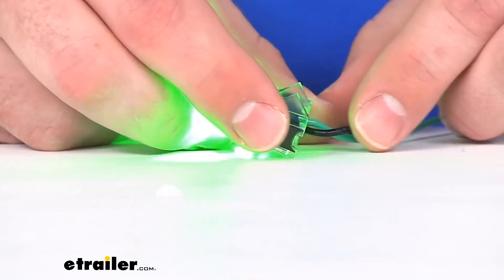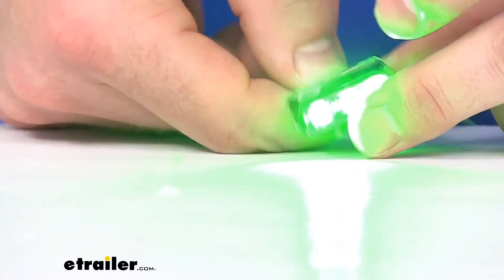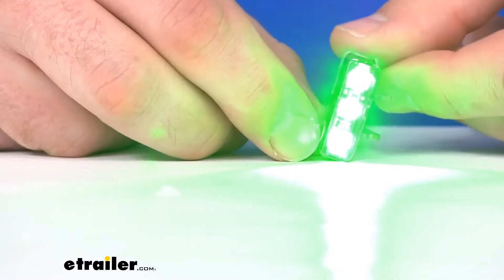This is a surface mount installation. The protective cover is sold separately. You can find that here at eTrailer.com if you want to give it a nice finished look to it.